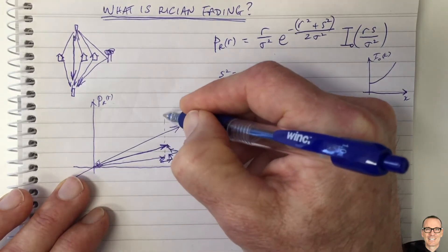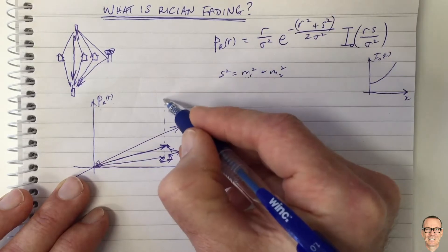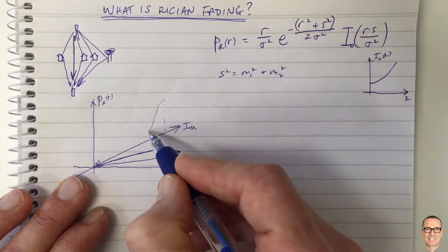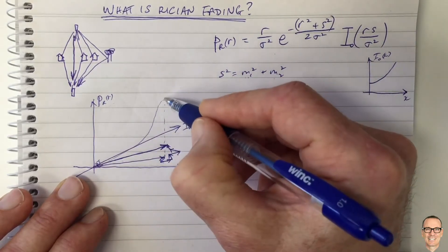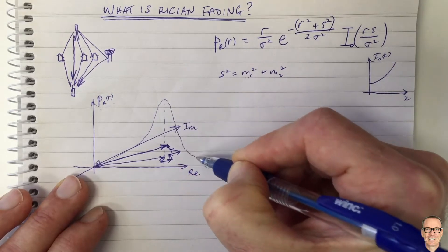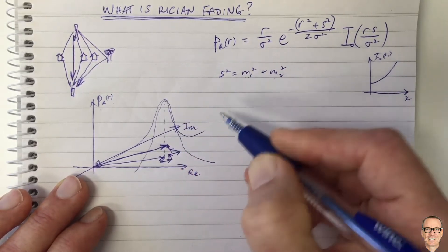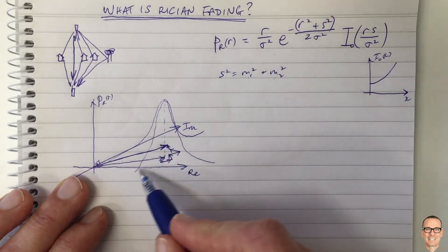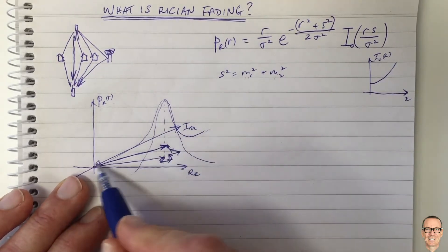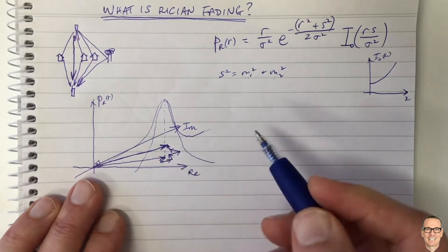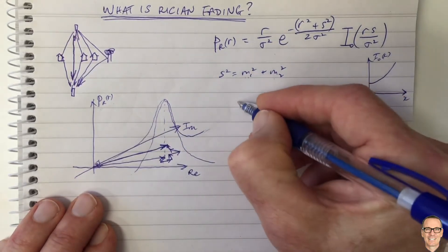The dominant path here, if we go up into probability space, there's now going to be a Gaussian distribution in terms of probability sitting in the real direction and in the imaginary direction, just as it was for Rayleigh over that point there, over the dominant path. And so you can see here, I think, that